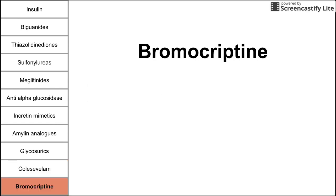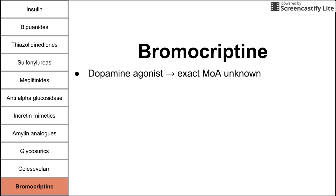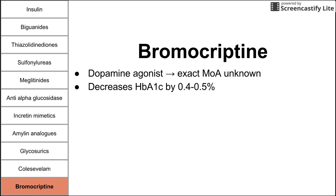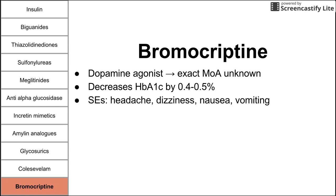Finally, bromocriptine is a dopamine agonist also not primarily used for diabetes, but it has been approved for it. Its exact mechanism of action in diabetes is unknown. It decreases HbA1c by a very modest 0.4 to 0.5%. Side effects include headache, dizziness, nausea, and vomiting. This has been an overview of drugs used to treat diabetes mellitus.